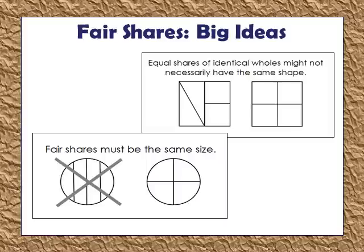Some topics to focus on at the beginning of the fractions unit: fair shares must all be the same size. A lot of students will try to partition a circle incorrectly, creating unfair or unequally partitioned shares. Another concept related to NF1 is that equal shares might not have the same shape, but they need to have the same area or measure. Students probably won't understand that at the beginning of the unit, but through enough real-world tasks they can build this understanding. There are one or two meaningful math tasks related to this concept.